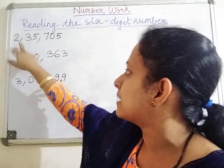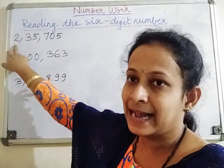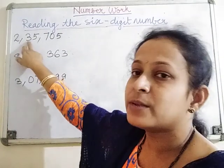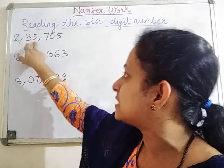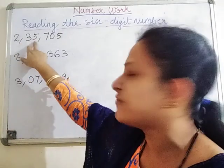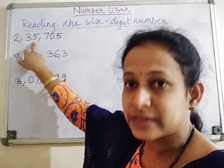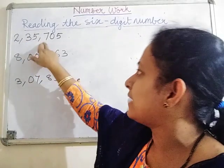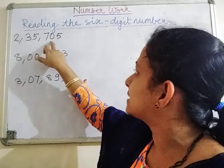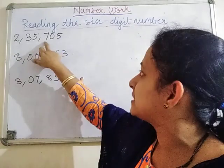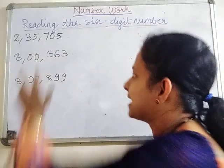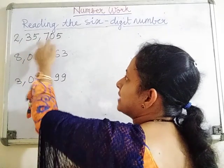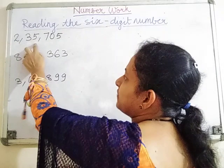We will start reading this number by saying two lakh. In the ten thousands place there is three, so it becomes thirty thousand. Thirty thousand plus five thousand becomes thirty-five thousand. So two lakh, thirty-five thousand - because five is also in the thousands place. In the tens place there is zero, so we cannot read it as seventy-five. We read it as seven hundred and five. So the full number is two lakh, thirty-five thousand, seven hundred and five.